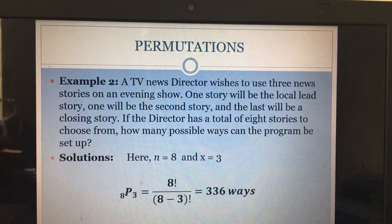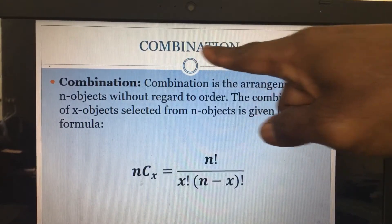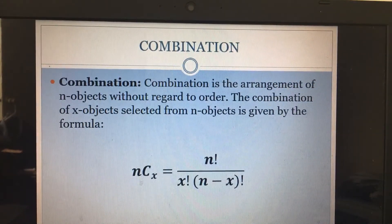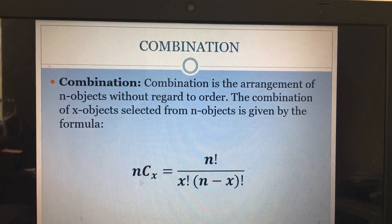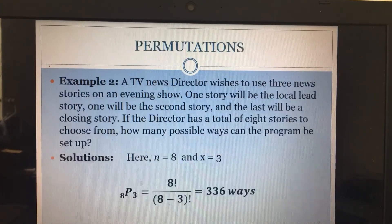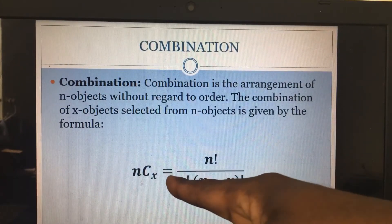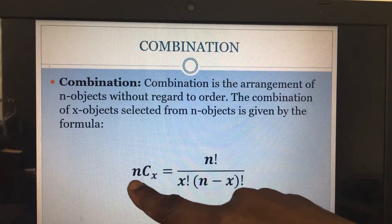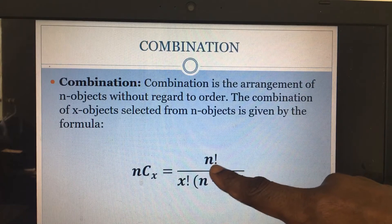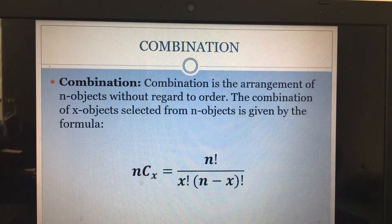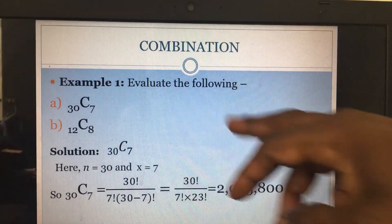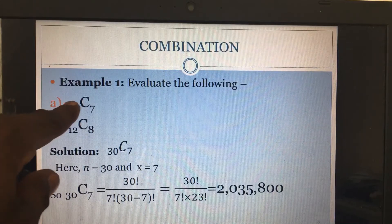Now let's look at a different type: combination. The difference between combination and permutation is that in a combination, there is no regard to order — it can be in any order. In permutation, there has to be a specific order. The formula for combination is: n combination x equals n factorial divided by x factorial times n minus x factorial.